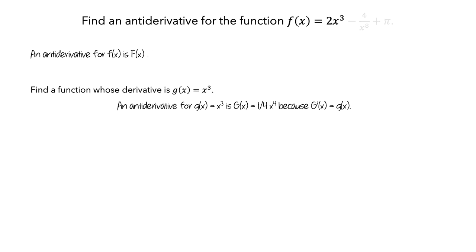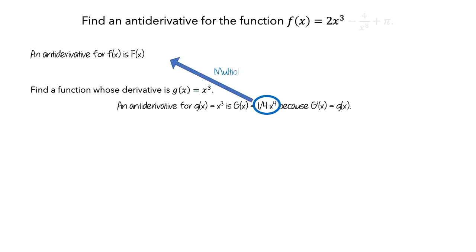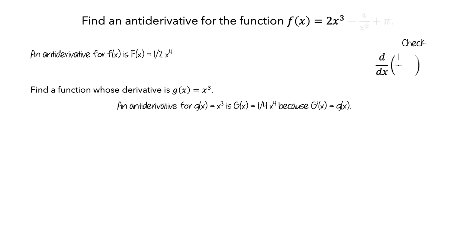Going back to our main goal of finding an antiderivative for little f of x: since the first term of little f is two times little g, then we would anticipate that the first term of the antiderivative for f is twice what we just got for capital G. So let's try one-half x to the fourth. To check, we take the derivative of one-half x to the fourth. This derivative is 2x cubed, and we can see that this is equal to our first term of little f.